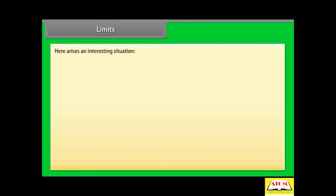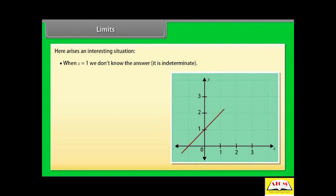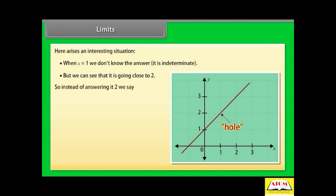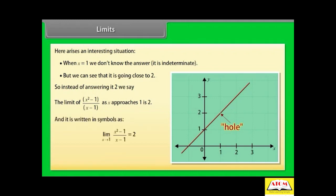Here arises an interesting situation. When x = 1 we don't know the answer — it is indeterminate — but we can see that it is going close to 2. So instead of saying the answer is 2, we say: the limit of (x² - 1) / (x - 1) as x approaches 1 is 2. It is written in symbols as: limit x tends to 1 of (x² - 1) / (x - 1) = 2. We cannot tell the value at x = 1, but we can say that as we approach 1, the limit is 2.